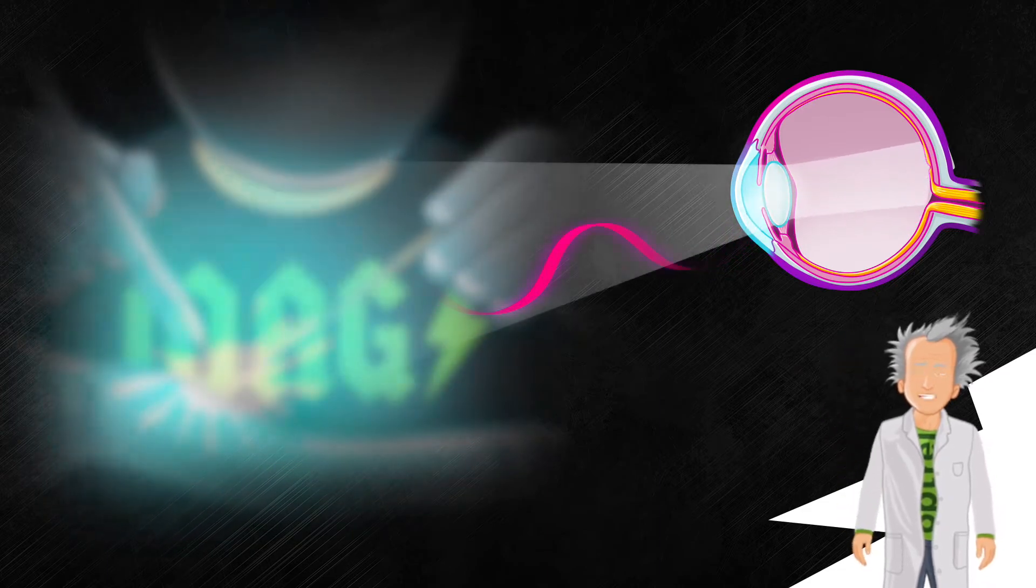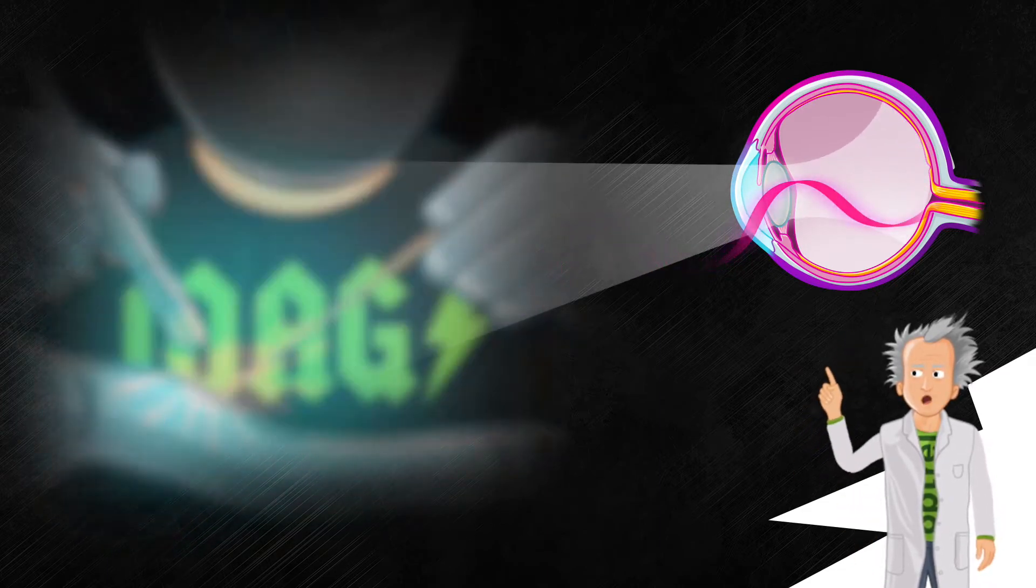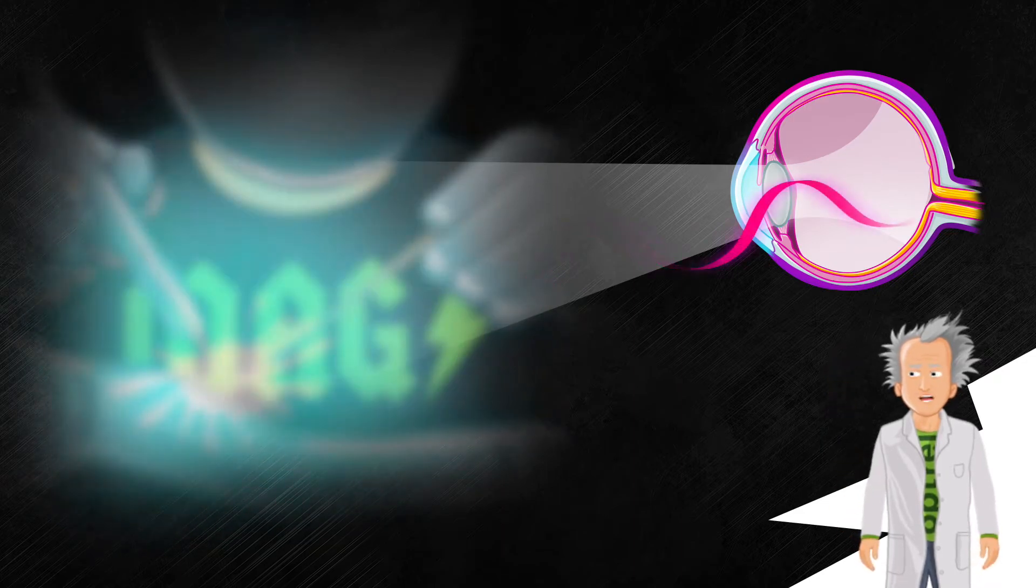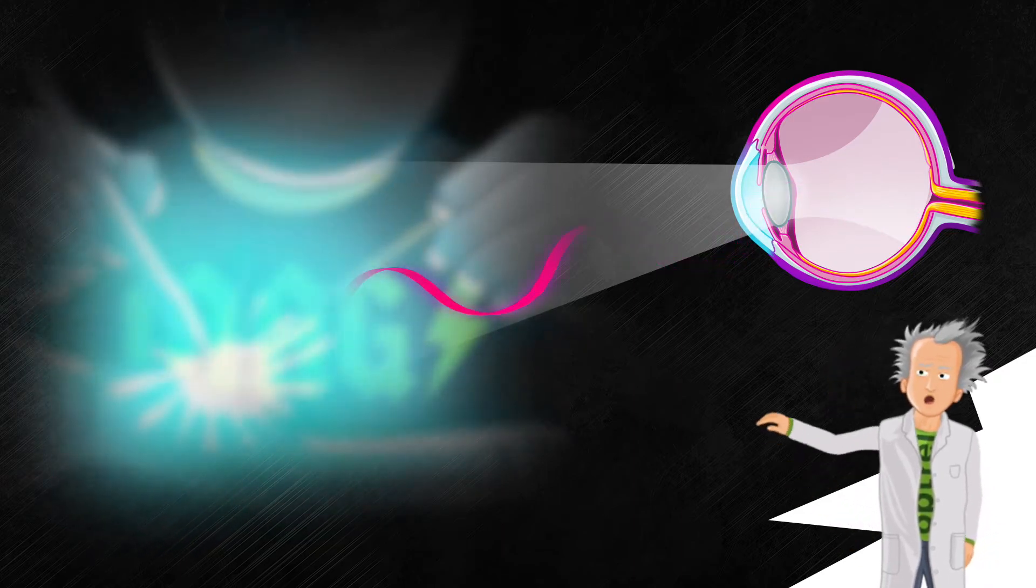This causes damage to cells in the eye and vision mists over. Everything becomes blurred and cloudy. This abnormality is called a cataract.